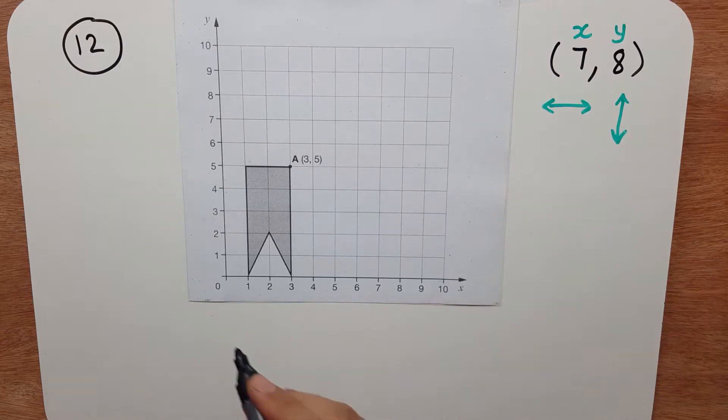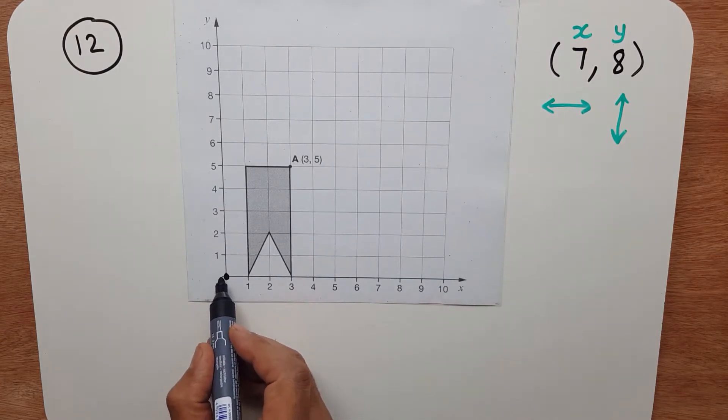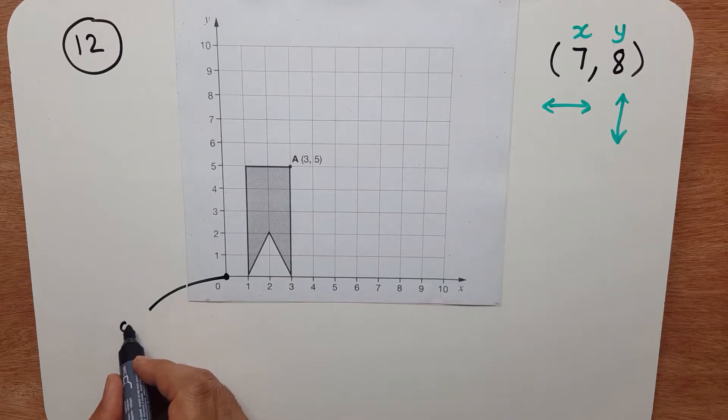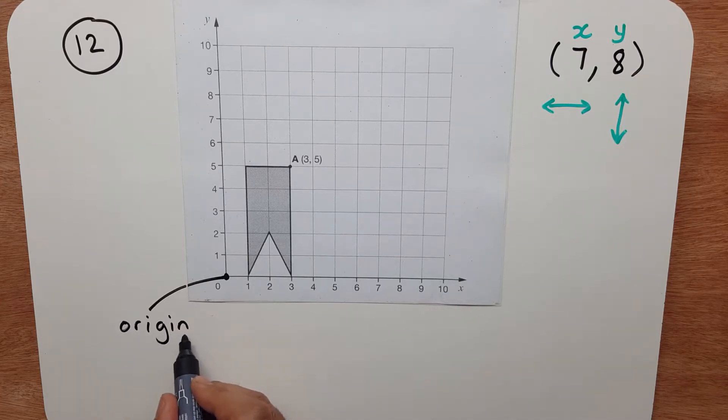So let's get to 7. You always start at the origin. This here is the origin. This just means where does it start from? The whole grid originates from here.